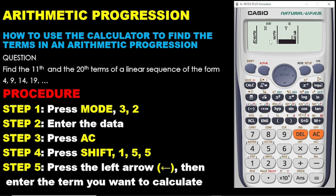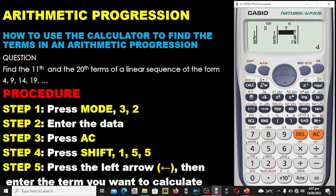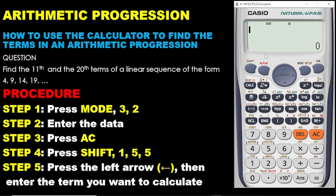We need to move on to the next stage. To do that, we will have to clear the screen. Please don't press anything other than AC. So in step 3, press AC. We have done step 1 by pressing mode then 3 then 2, then entered the data — the X column for the terms and the Y column for the values. The first term is 1 with value 4, the second term is 2 with value 9. Once done, press AC. Your data has been saved on the calculator.